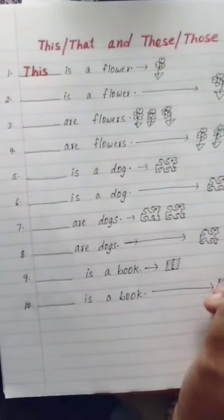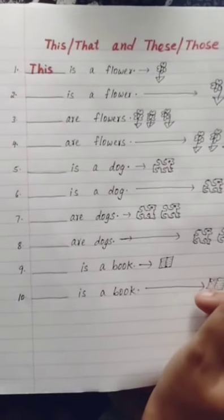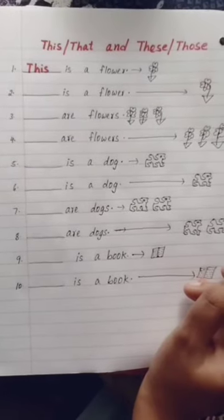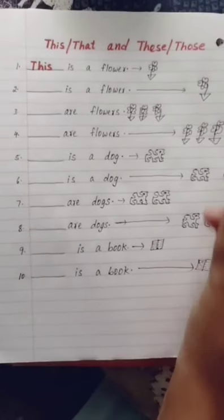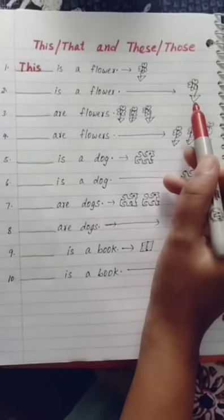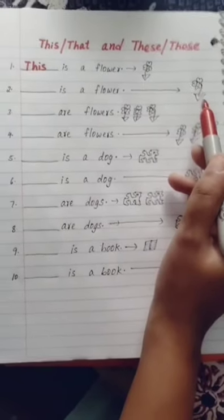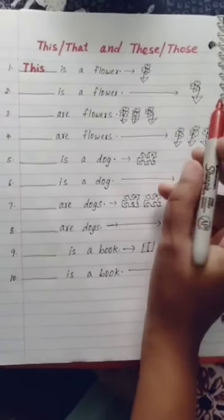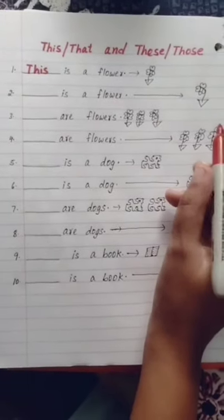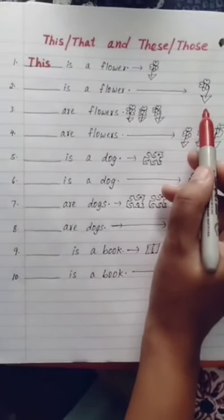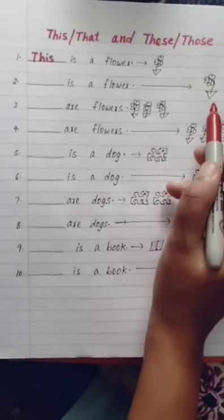Second example: blank is a flower. The flower is far away. There is only one flower, singular noun, so we have to use 'that' — that is a flower.